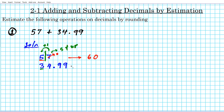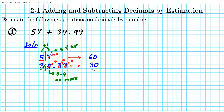We're going to apply the same procedure to 34.99, rounding to the tens place — the three. Let's put up our partition and take a look at the number on the back. This is zero to four — no more. So basically we're not going to add anything; we just set this four to zero, and these all become zero. So 34.99 rounded to the tens place is simply 30. Because the number behind the tens place was zero to four, no more. Now we simply add these two numbers: 60 plus 30, and the answer is 90.